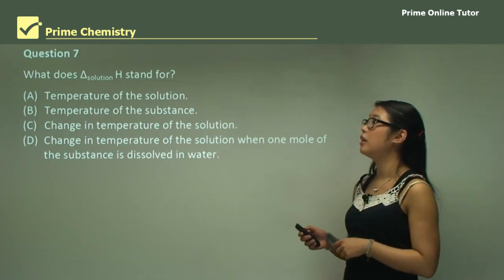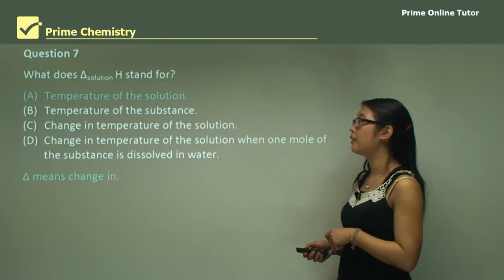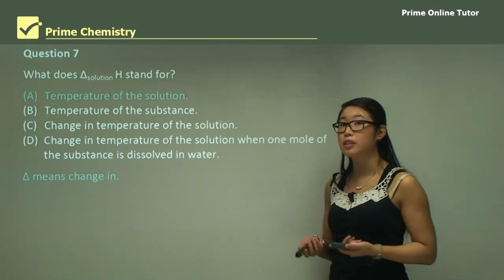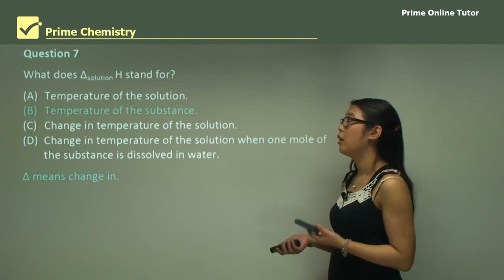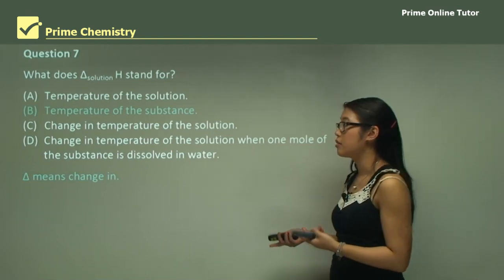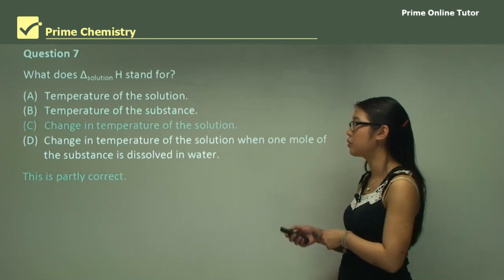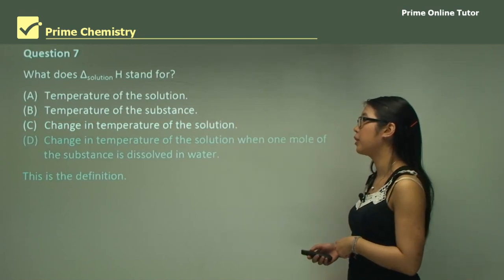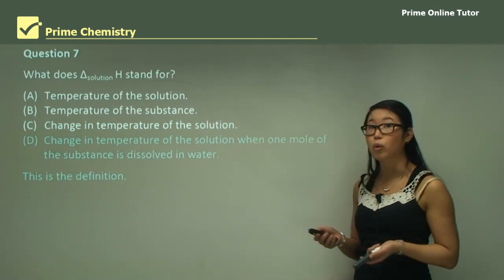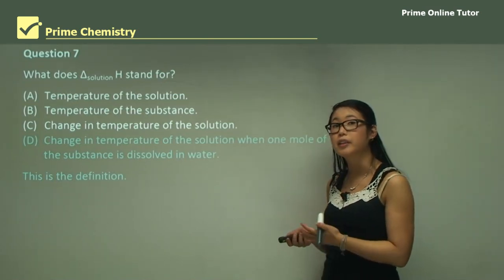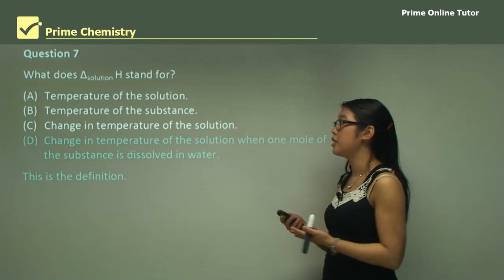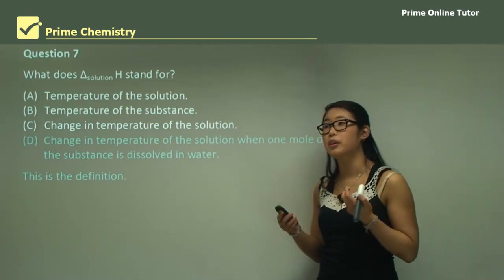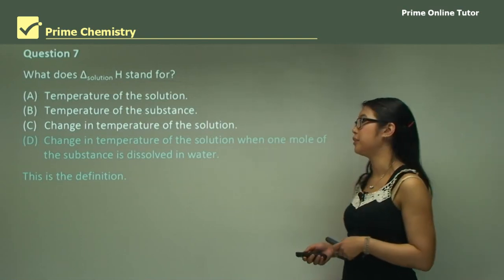Question seven: what does the delta solution H symbol stand for? It's not the temperature of the solution, and it's not the temperature of the substance since delta means a change in something. It's partly the change in temperature of the solution, but we need more information. The correct answer is D: the change in temperature of the solution when one mole of the substance is dissolved in water, because delta solution H specifies the mole involved in the reaction.